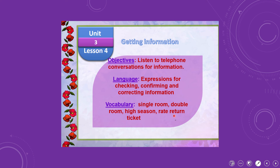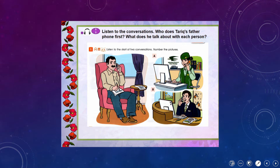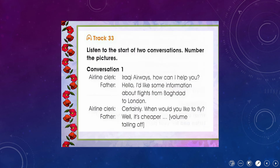Listen to the conversations. Who does Tariq's father call first? What does he talk about with each person? In Track 33, you have to listen to the start of two conversations and number the pictures. Conversation one is between an airline clerk and the father.